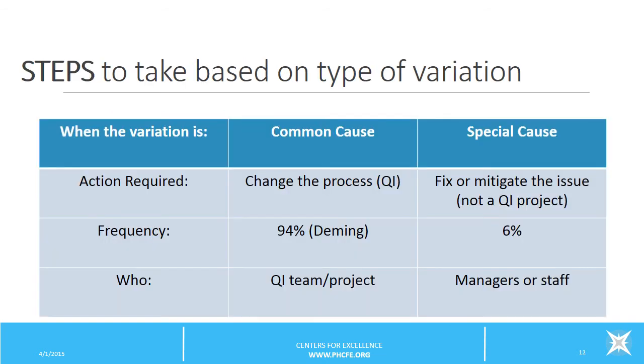Here is a simple table to help guide actions based on the types of variation that are identified. As indicated in the middle column, if the cause of variation is common cause, then the action to take is to change the process. Common cause variation represents about 94% of all the variation we see in processes. The responsibility for changing the process would fall to a QI team working on the QI project.